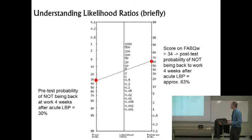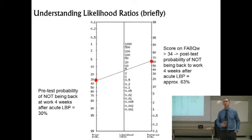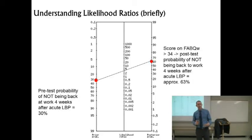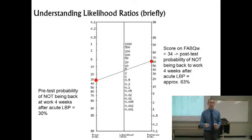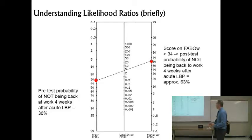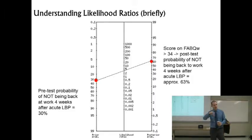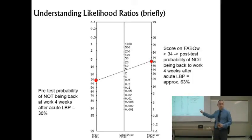Let's imagine 30% of people following an acute low back injury are not back at work after four weeks. A patient comes in with a referral for acute low back injury — the pretest probability that they're not going to be back to work in four weeks is 30%. While they're in the waiting room, they fill out the FabQ work subscale. If I get a score of 34 or higher, Fritz and George tell us a positive likelihood ratio of 3.33 means they're in the higher risk group for not returning to work.